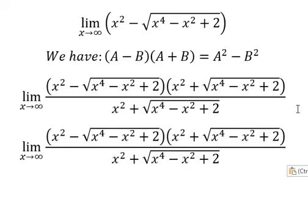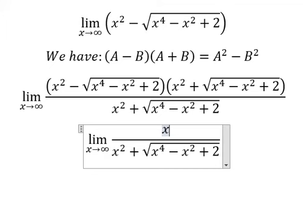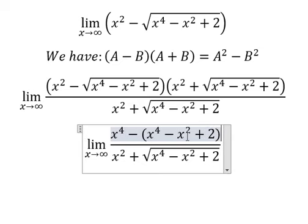So this one we will have x to the power of 4 minus x to the power of 4 minus x squared plus 2. So this one and this one we can solve. Negative will change the sign of this one.